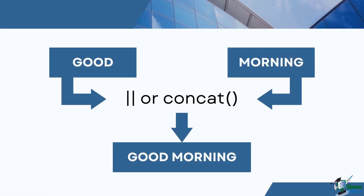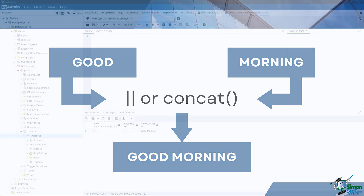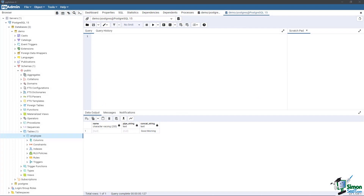Consider the two string values 'good' and 'morning' as an example. We could merge these into the string 'hello world' using concatenation. To do this with SQL, we can use the concatenation operator pipe (||) or the CONCAT function. Here is an example of how to concatenate two strings using the pipe operator.